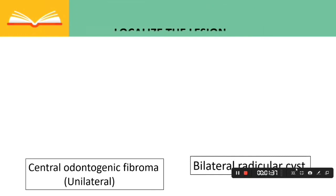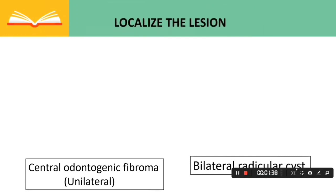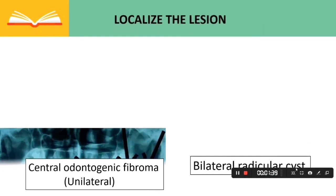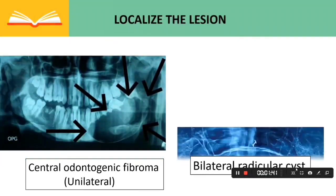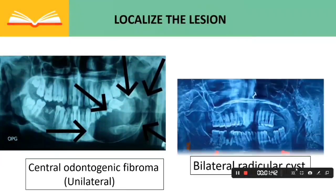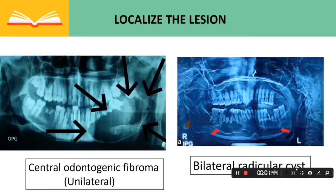In localizing the lesion, it can be either unilateral, such as a central odontogenic fibroma, or bilateral, such as a bilateral radicular cyst.